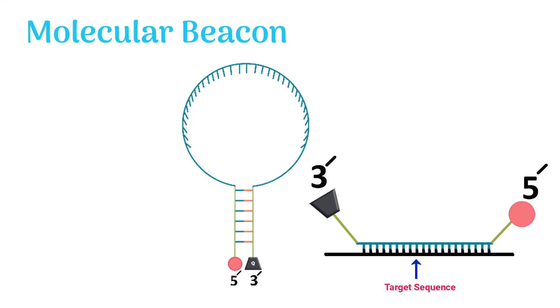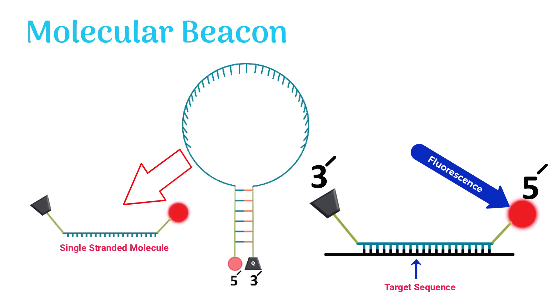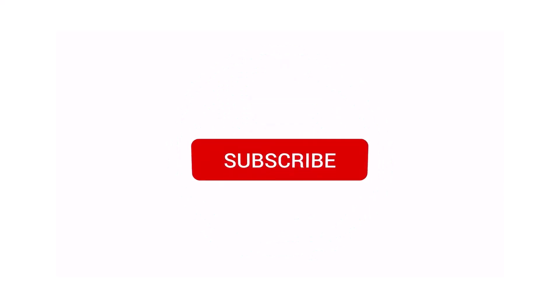So the reporter starts emitting light and causes fluorescence. Remember, molecular beacon is a single-stranded molecule and it is around 20 to 25 nucleotides in length.